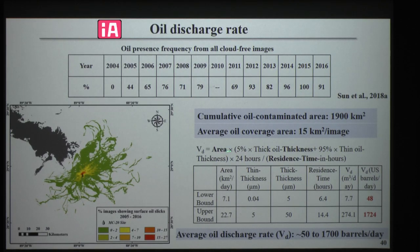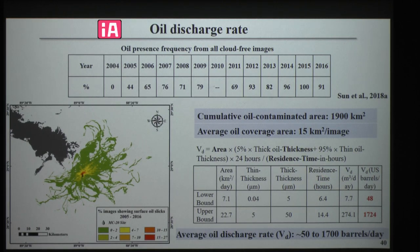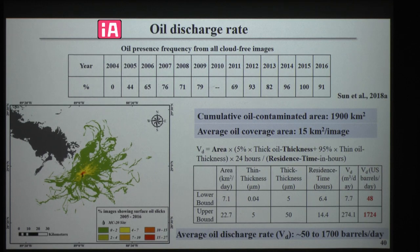The average oil coverage area was estimated to be 15 square kilometers per image, including all cloud-free images. Using this area, oil thickness, and the residence time determined from model results at natural seep locations from a previous study, with input parameter upper and lower bounds, the average oil discharge rate was estimated to be 50 to 1,700 US barrels per day. Even with this very conservative lower bound estimation, 50 US barrels per day is much, much larger than the claim from the company who owns this platform — they estimated 2 to 3 gallons per day.